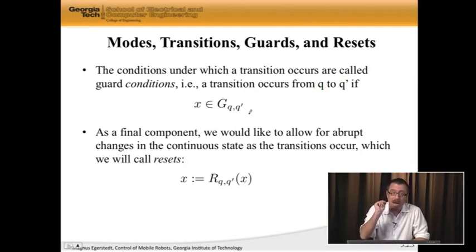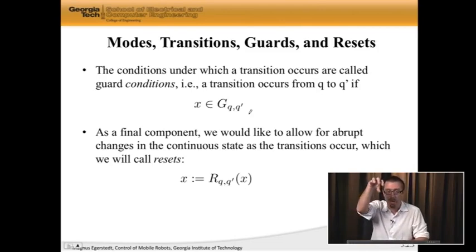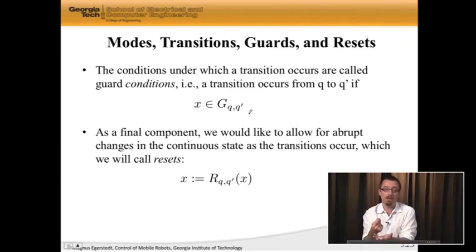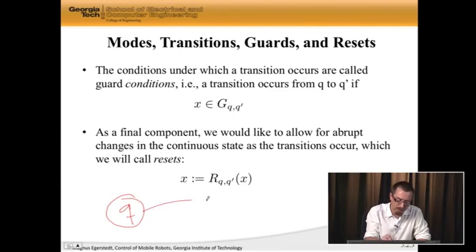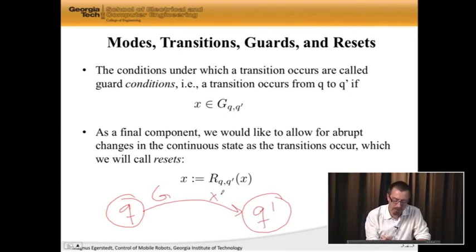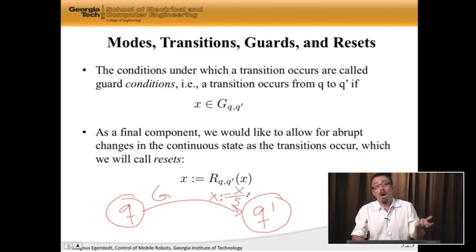We're also going to add something called a reset, which is going to tell you not when you jump, but where you end up after you made the transition. When I'm jumping, I may actually reset the value of my state. For instance, if I'm dropping a ball onto this desk and it bounces up, it loses energy in the bounce. We're subtracting a piece away from the state at each bounce. This way of messing with the state at the moment the transitions occur is called a reset.